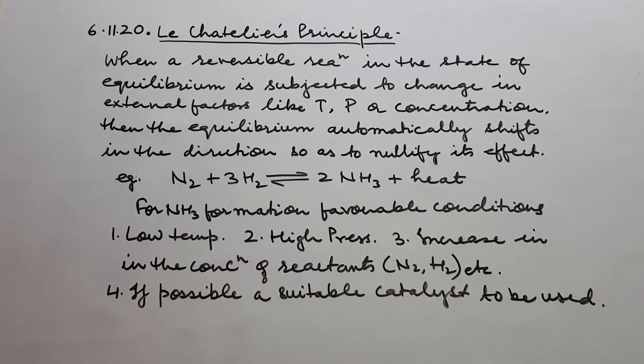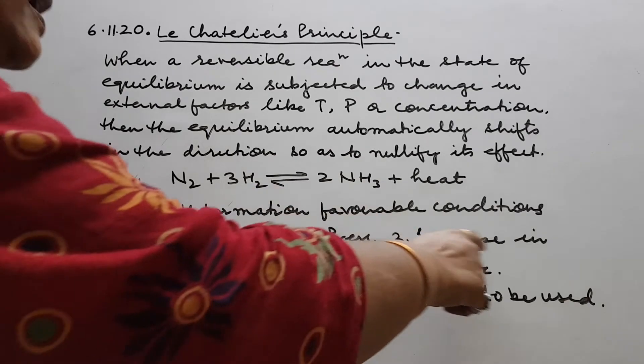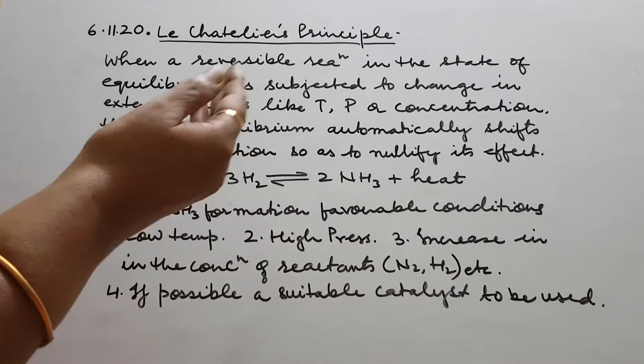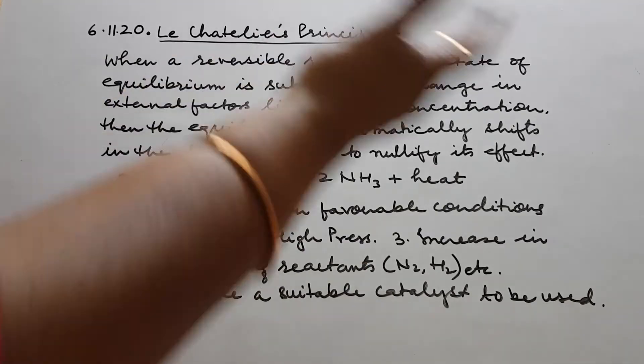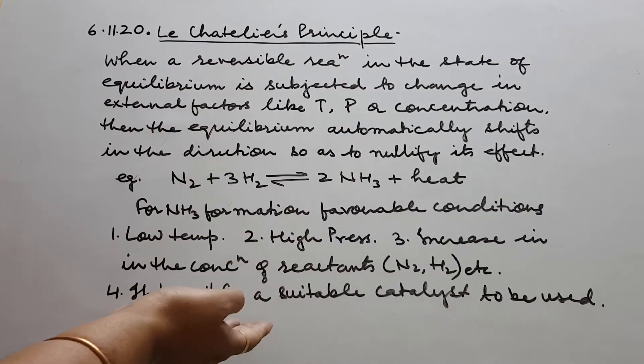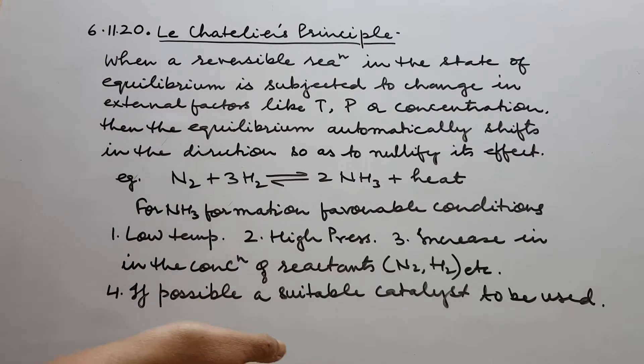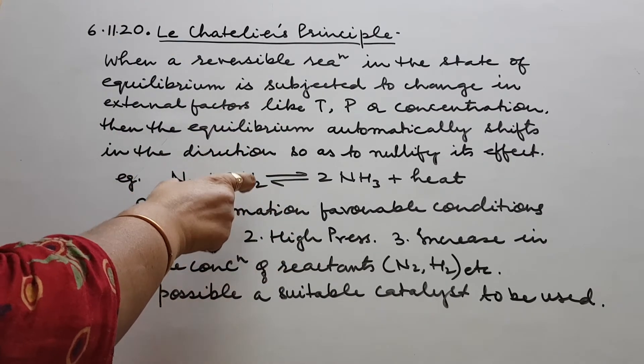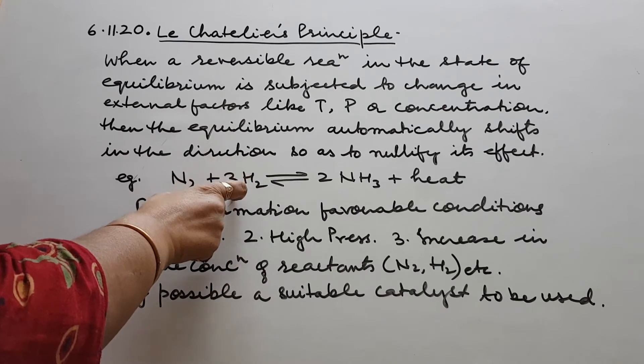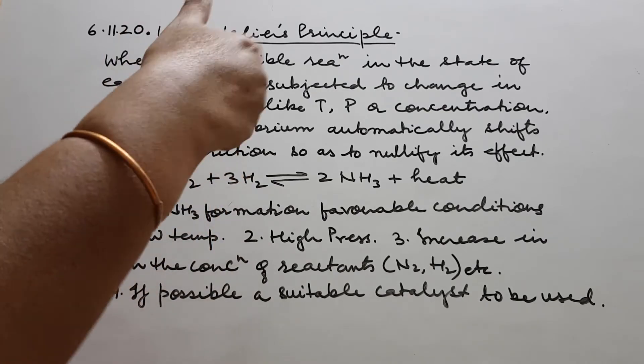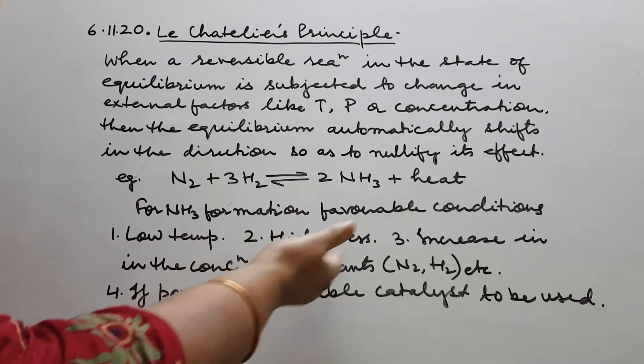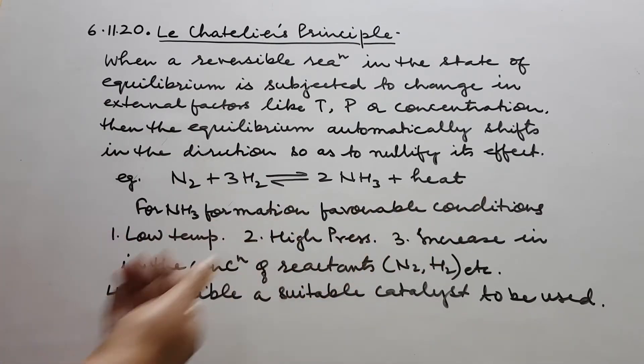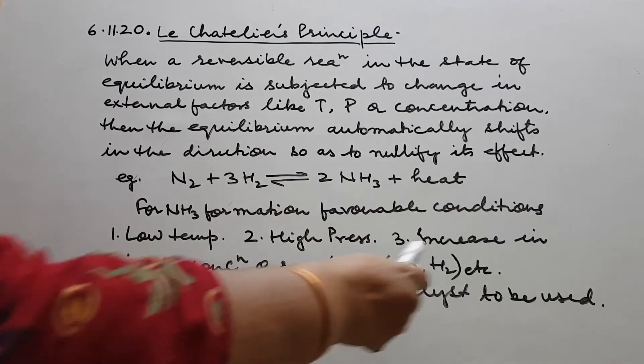And we know from class 10 Haber's process, low temperature and high pressure. Then, increase in the concentration of reactants always, as I told you, rate of any reaction. We have seen law of mass action is directly proportional to the product of the concentrations of the reactants, with each concentration term raised to the power equal to its stoichiometric coefficient. So simply, increase in the concentration of reactants, N2 and H2 or whatever you have.